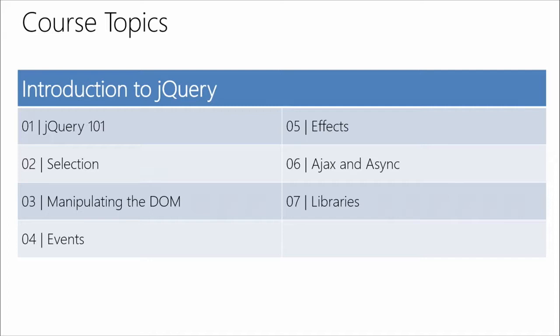Now we're going to be moving into modules four, five, six, and seven, which are quite disparate — they don't necessarily build on each other, although they all do build on the concepts from modules two and three. If you missed those modules, you may want to review those before moving into four, five, six. Module seven is altogether different — mostly discussion around the library space near jQuery.